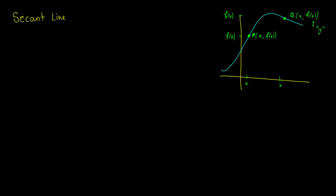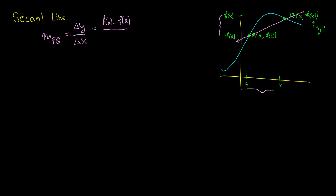A secant line is a straight line that hits both points. So that is our secant line right there, and we want to find the slope of the secant line. The slope is denoted by m, taken between two points P and Q. This equals the change in y over change in x, which is f(x) minus f(a) over x minus a — we want both to be positive.